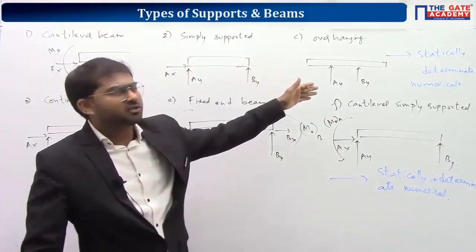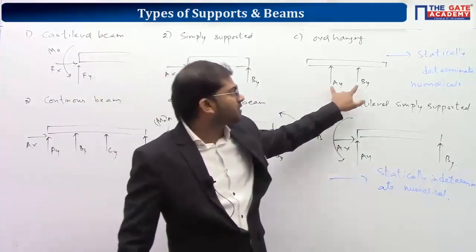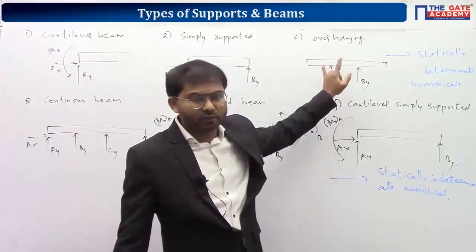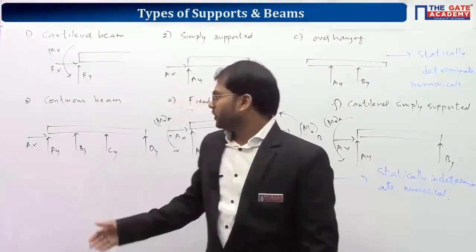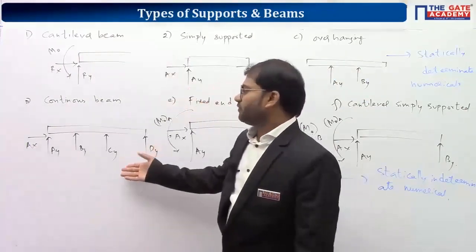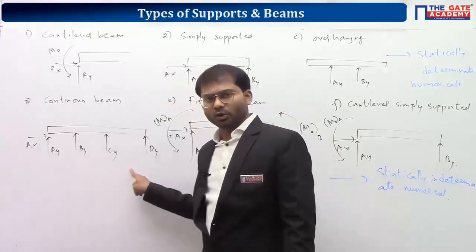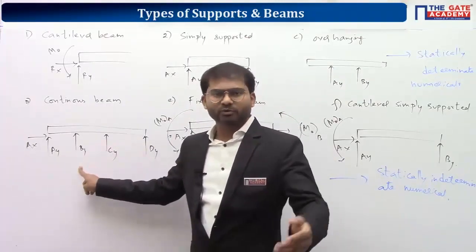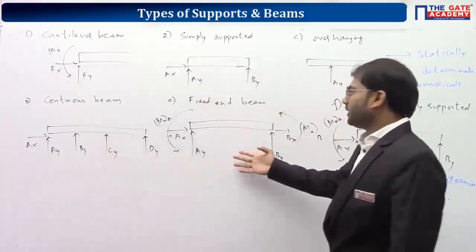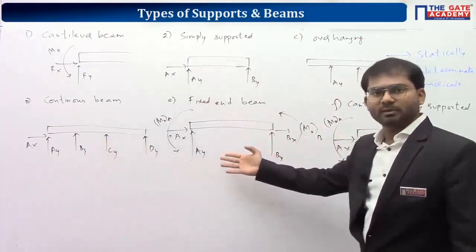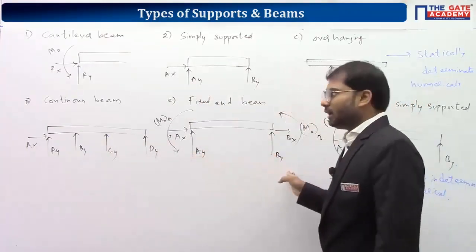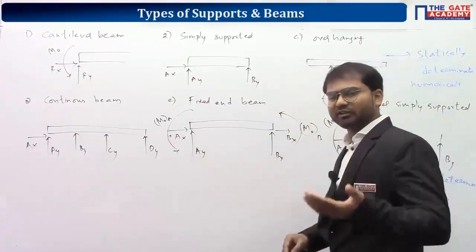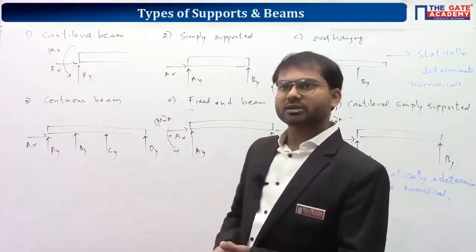An overhanging beam can have two roller supports or one hinge and one roller, but we cannot have two hinges. For a continuous beam, we will have one hinge and the remaining are rollers — it will have more than one roller. A fixed beam has fixed supports. A propped cantilever beam has a fixed support and a roller.